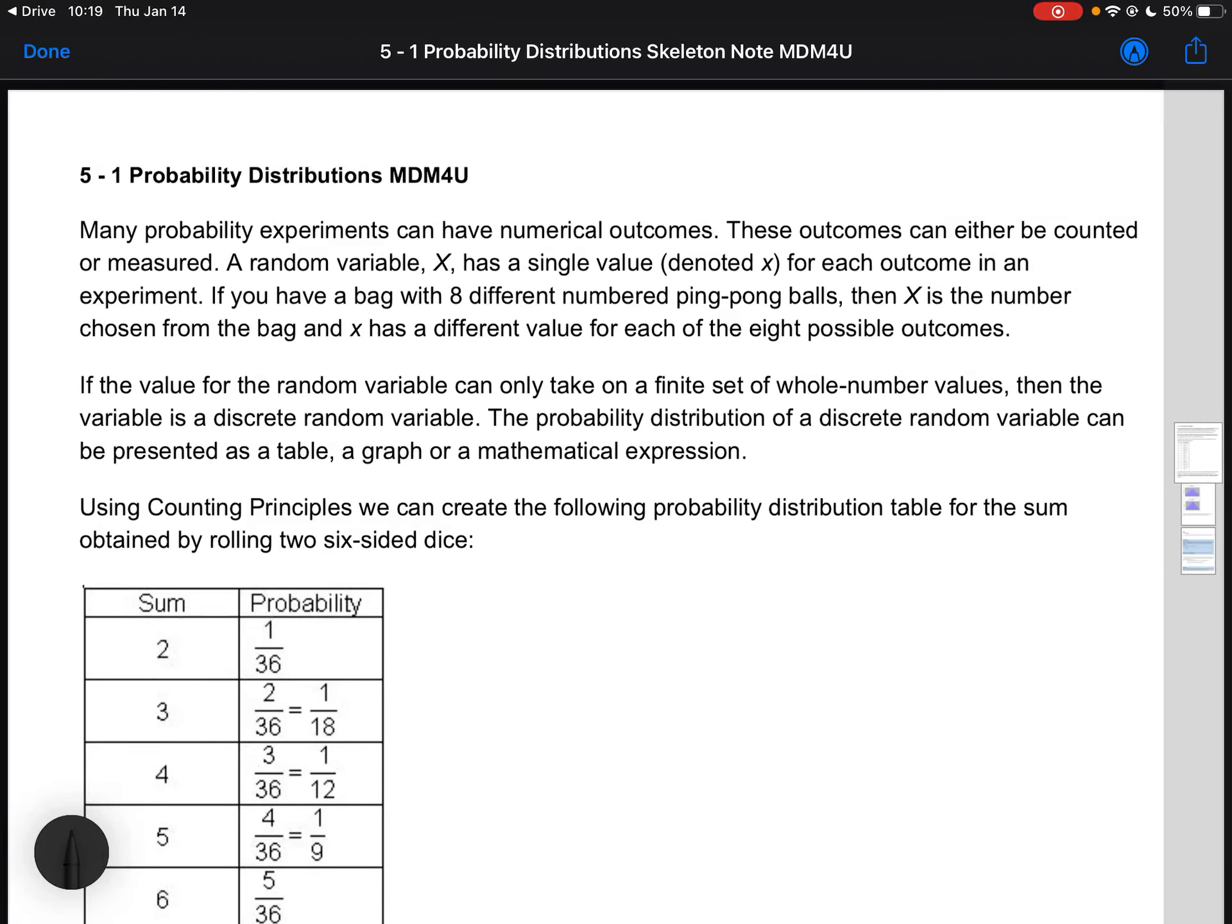This video goes over what a probability distribution is. Many probability experiments can have numerical outcomes, and the outcomes can be counted or measured. A random variable X has a single value, denoted little x, for each outcome in an experiment.